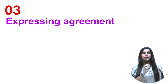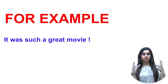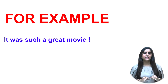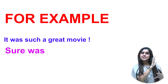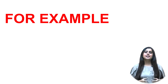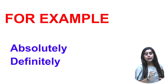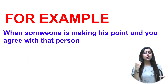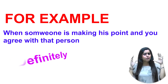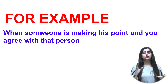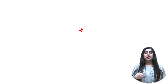Next we have expressing agreement. Agreement here simply means sharing the same opinion — for example, after a movie you say 'It was such a great movie' and someone agrees. Instead of just saying 'yes yes,' we can say 'sure,' 'absolutely,' or 'definitely.' When someone is making a point and you agree, you can say 'absolutely,' 'I agree with you,' or 'definitely — it was true.' So you can use 'sure,' 'absolutely,' 'totally,' or 'definitely.'